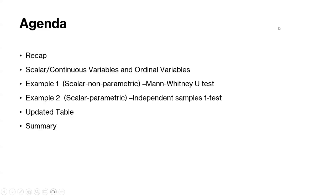This is the agenda for today. We're going to do a recap on last session — a 10-minute quick refresher on what we talked about — and use it to lead into today's topic, which is comparisons between groups of data with scalar or continuous variables, whereas the last sessions covered comparisons with nominal data. We're going to focus on unpaired tests. Paired comparisons are a whole separate set of tests and we will discuss that in the next session. We'll talk about non-parametric and parametric comparisons for ordinal and scalar variables.